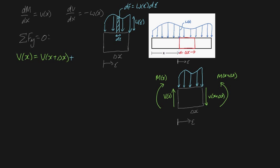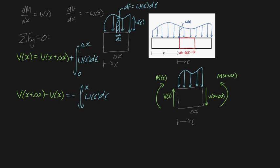If we want to account for the entire force due to this entire distributed load over our length, we just integrate. So this is going to be the integral of w of epsilon d epsilon with limits of integration from 0 to delta x. If we rearrange this formula, we can get v of x plus delta x minus v of x is equal to minus the integral from 0 to delta x of w of epsilon d epsilon. Now I'm going to divide both sides by delta x. If we divide both sides by delta x, then we're left with this — it's just a rearranged version of what we had above.